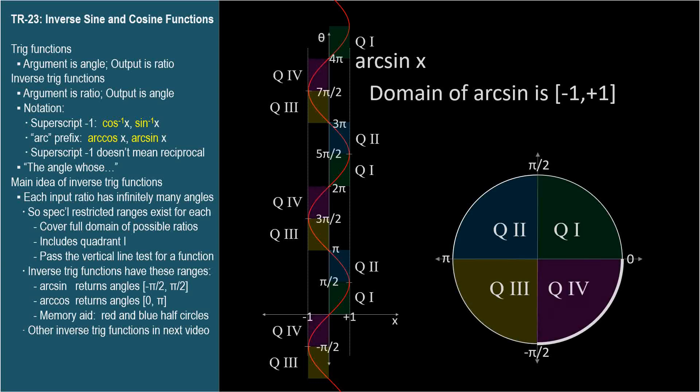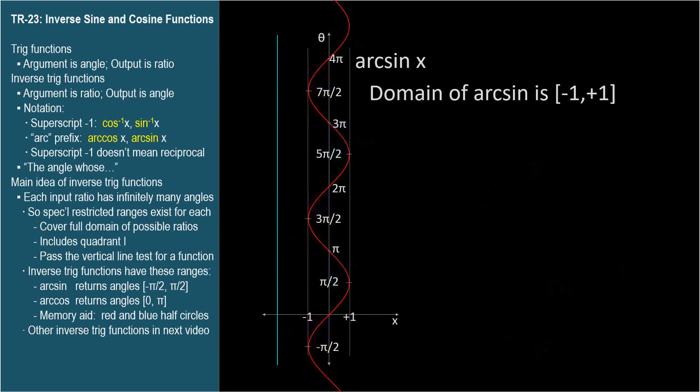The curve fails the vertical line test for a function. We should have expected this when the sine graph itself had so many angles, 16 on the screen, with the same sine. But rather than give up on having an arc sine function, let's limit its range. Can we find a piece of the arc sine function that encompasses the full domain from negative 1 to 1 and passes the vertical line test?